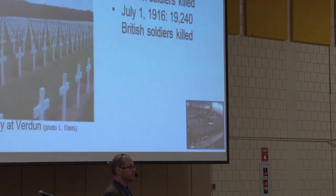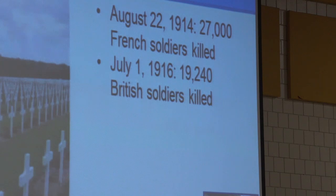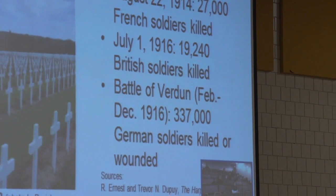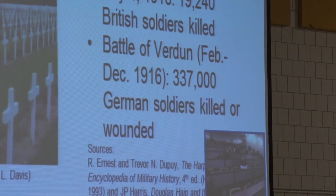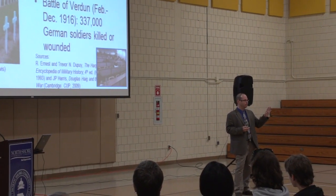July 1st, 1916 — the worst day in British military history. The Battle of Verdun, from February to December 1916, saw 337,000 Germans killed or wounded. As the famous quote goes: when one person dies, that's a tragedy; when a million die, that's statistics. I've learned over 20 years of teaching to be very wary about just throwing statistics around, because behind those numbers are people, human beings. What I'm going to do is really put a human face on those statistics for you.